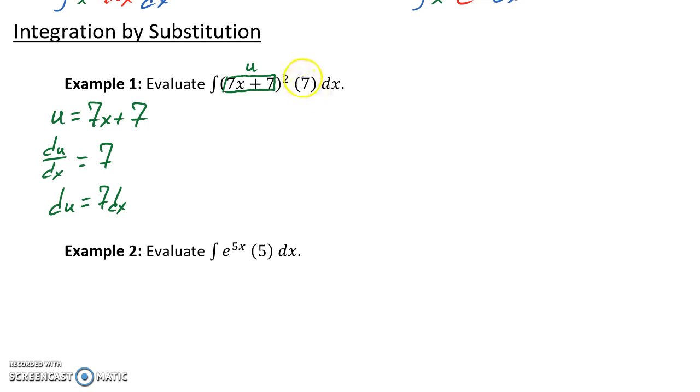If we look back at the original integral we're trying to evaluate, we'll see that we have that statement, 7dx, contained as part of it. So what we can do is replace this 7dx portion with du, since this equation tells us that those two quantities are exactly equal to each other. So essentially what we've done is made two substitutions, which will allow us to rewrite our integral as the integral of u squared du.